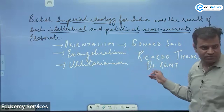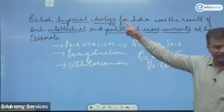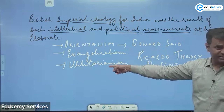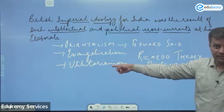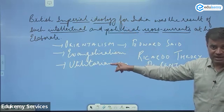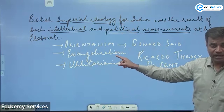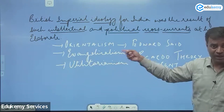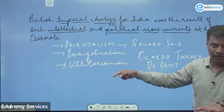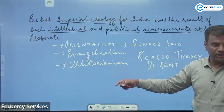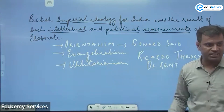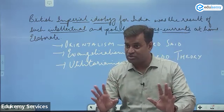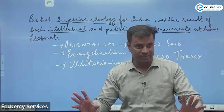This is also one of the cross-currents — it developed in Britain. In Utilitarianism, you can also write another concern: when they established the judicial system in India, they applied two important bedrock principles — rule of law and equality before law — which are followed even now. Both were given by British jurists. Modern India seems easy, but it is not.